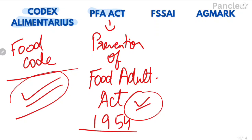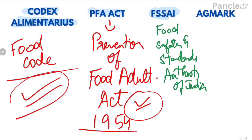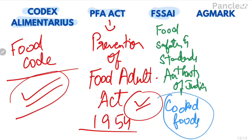There is also FSSAI — Food Safety and Standards Authority of India. This authority covers cooked foods, and if food meets the criteria, it will get an FSSAI mark. So food must comply with Codex Alimentarius, PFA Act, and FSSAI. Then there is Agmark — for raw materials, raw food items, uncooked foods, and agriculture products directly. So there are four basic legal items in food adulteration regulation.